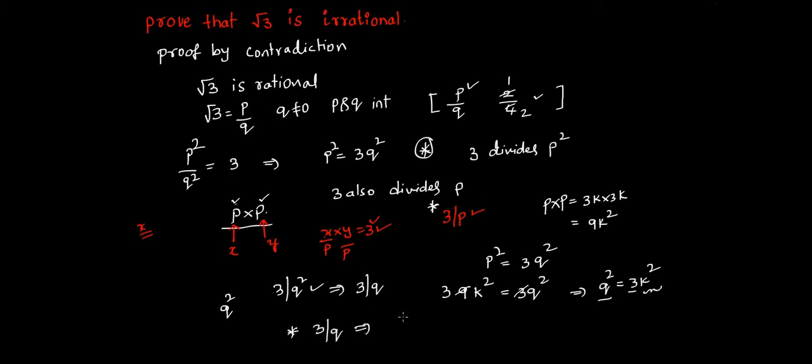Then I can write this Q as 3 into some integer, let's call it as I, right? Now let's summarize. So we proved that P is divisible by 3, so that P equal to 3 into J where J is an integer. Since Q is also divisible by 3, then I can write it as 3 into I.